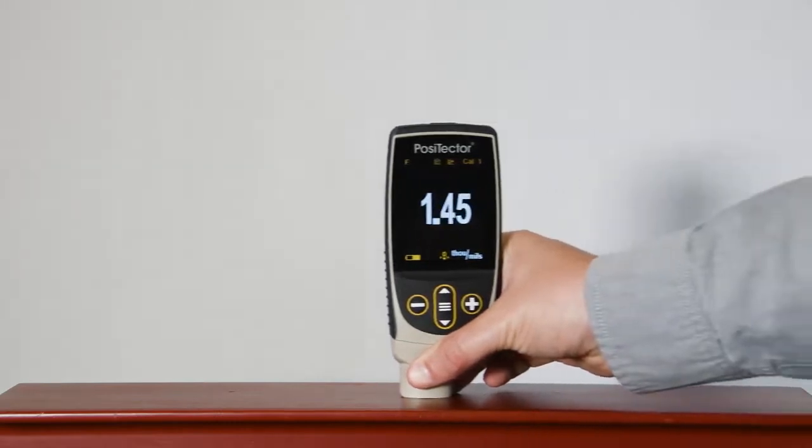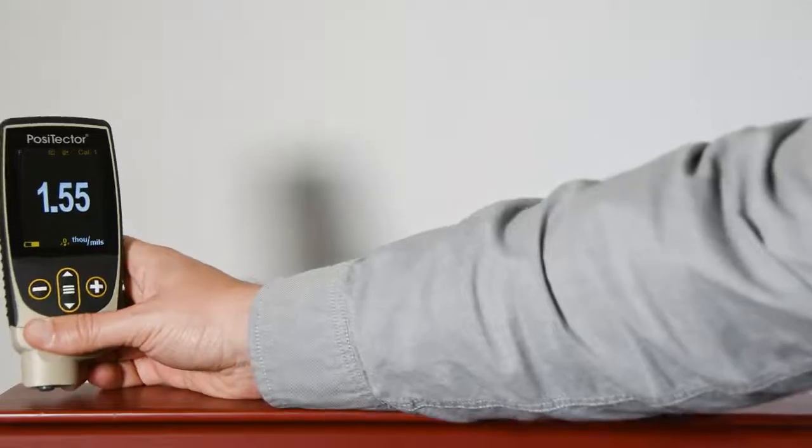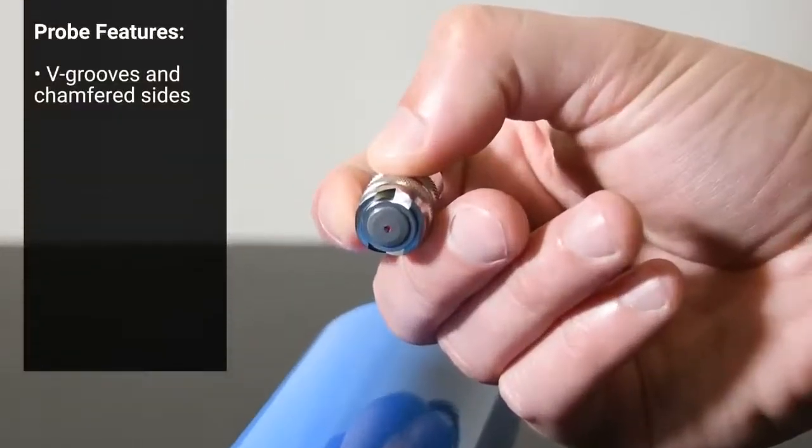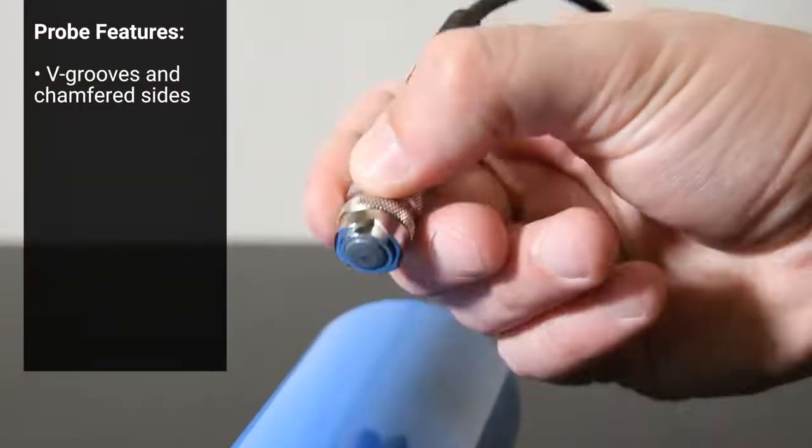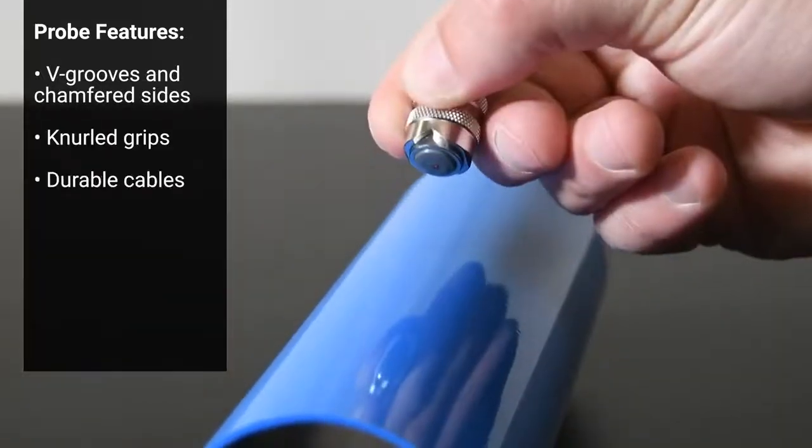PosiTector 6000 coating thickness probes are designed to take fast, accurate measurements in industrial environments. Our most popular probes feature V-grooves and chamfered sides for measuring on concave or convex parts, knurled grips, and durable cables.